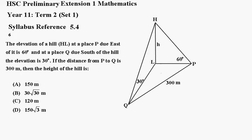Number 6. The elevation of a hill HL at a place P due east of it is 60 degrees. At a place Q to the south of the hill, the elevation is 30 degrees. If the distance from P to Q is 300 meters, the height of the hill is A, B, C, or D.